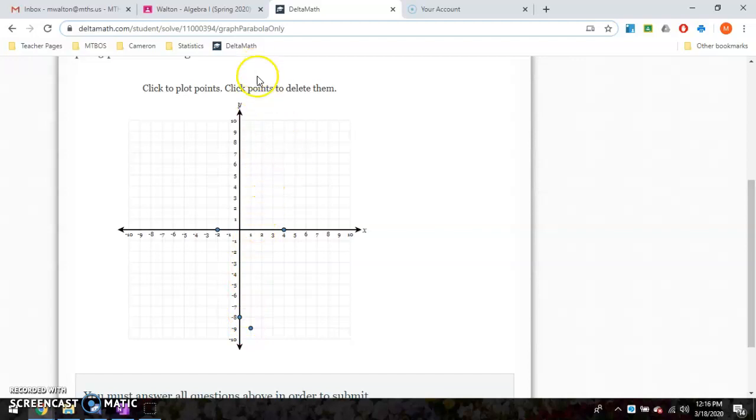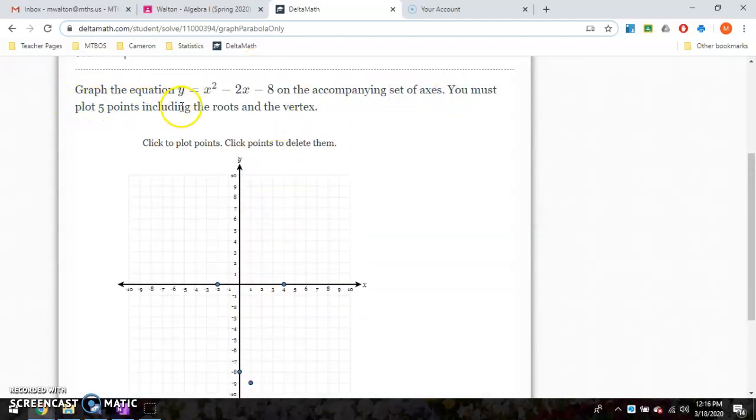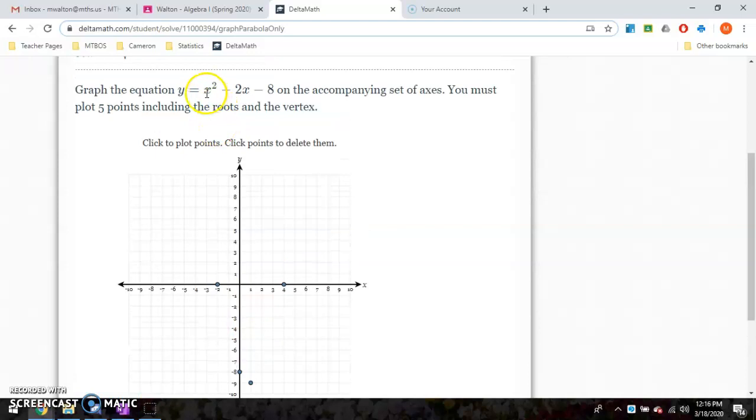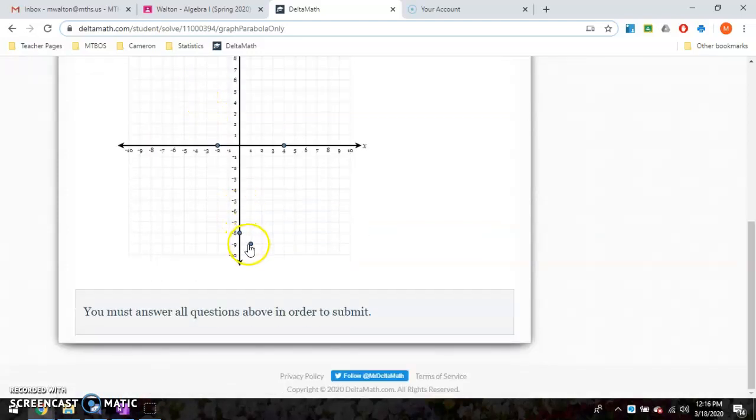And we need one more point before it says that you must plot at least five points. Well, we've got our x-intercepts. We've got our y-intercept. We have our vertex. Here's how I'm going to get my other point. This has a stretch of one. So from my vertex, I need to go up one. Well, and if this is a point on the graph up one, that means this is also one.